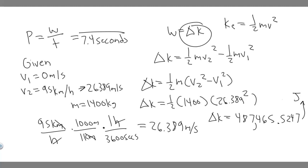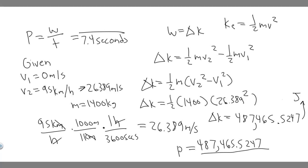Since the change in kinetic energy equals the work, we divide by time to get power. So P = 487,465.5247 joules ÷ 7.4 seconds = 65,873.71 watts. When you divide joules by seconds you get watts, so the power is 65,873.71 watts.